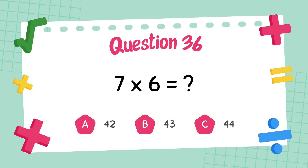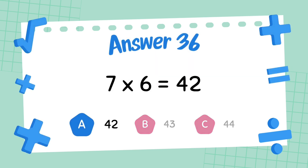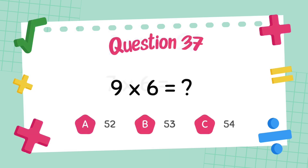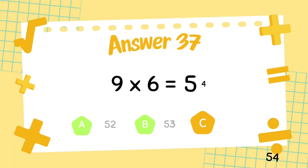What is 7 multiply 6? The answer is 42. What is 9 multiply 6? The answer is 54.